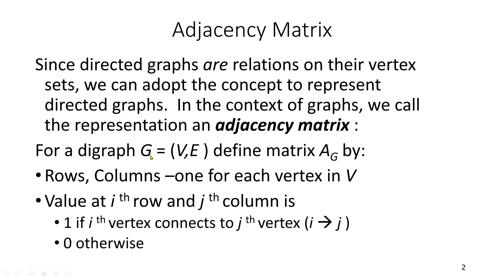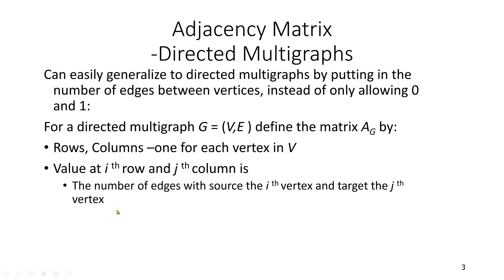For a graph G, which consists of a vertex set V and edges E, we define a matrix A sub G by rows and columns — one for each vertex in V. The value at the i-th row and j-th column is 1 if the i-th vertex connects to the j-th vertex; otherwise it's 0. We can easily generalize to a directed multi-graph by putting in the number of edges between the vertices instead of only allowing zero and one.